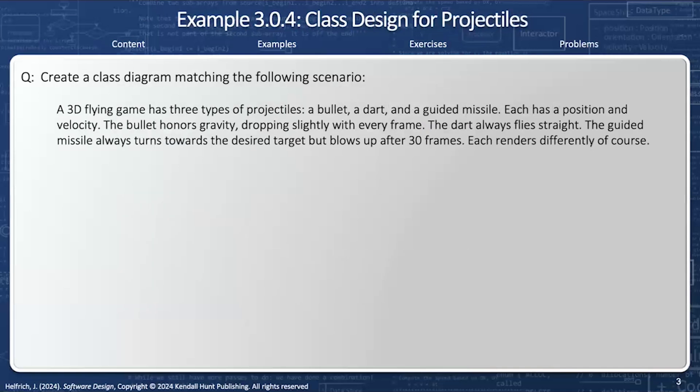A 3D flying game has three types of projectiles: a bullet, a dart, and a guided missile. Each has a position and velocity. The bullet honors gravity, dropping slightly with every frame. The dart flies straight, and the guided missile turns toward the desired target. It blows up after 30 frames. Every one renders differently, of course.